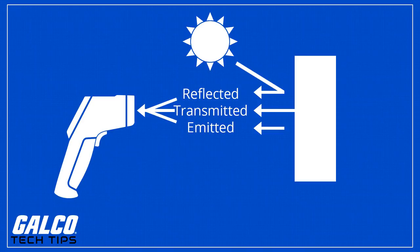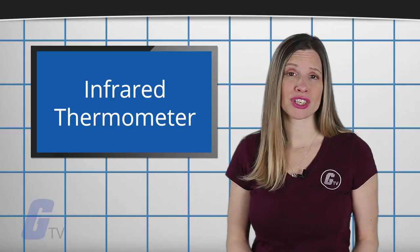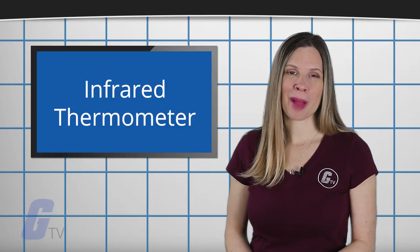This thermopile turns the IR radiation into heat, which then gets converted into electricity, which is measured and displayed on the screen of your thermometer. This whole process can be achieved in seconds or even a fraction of seconds depending on your thermometer.